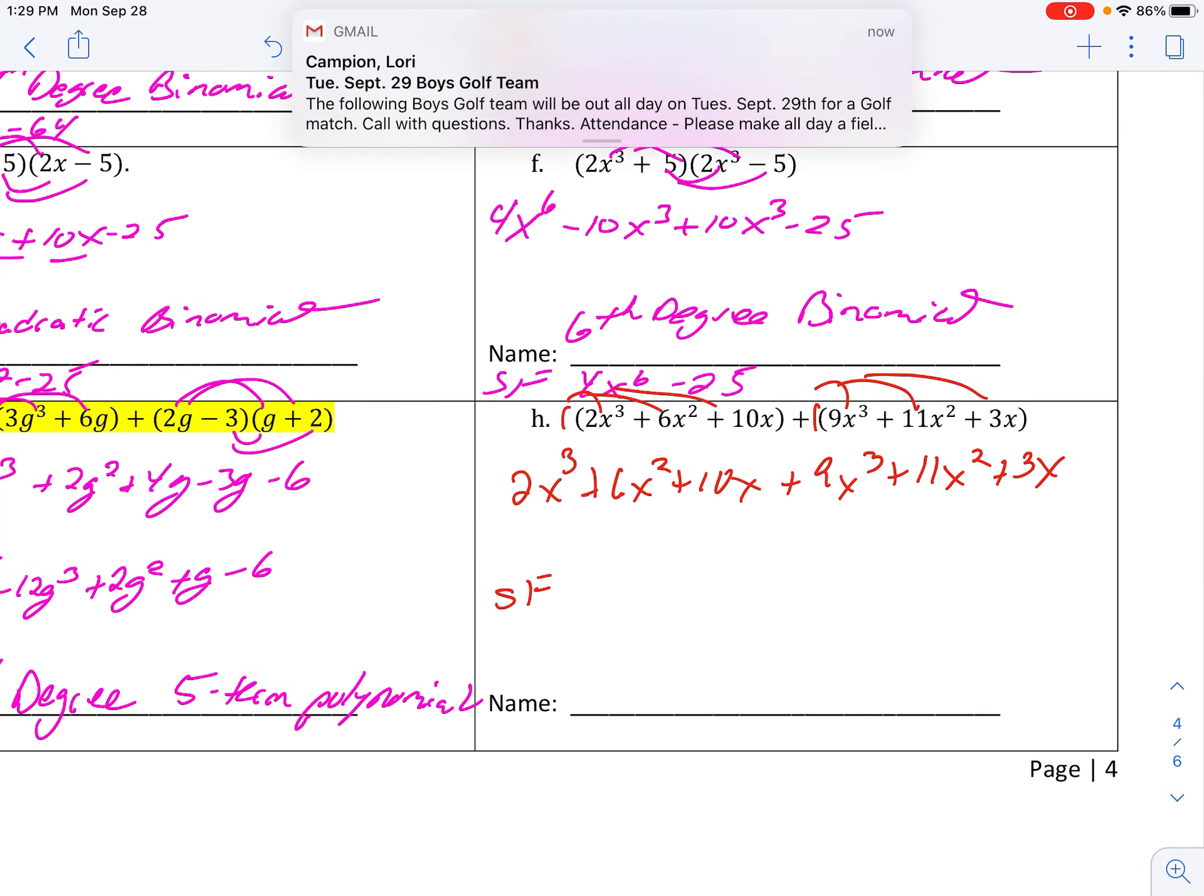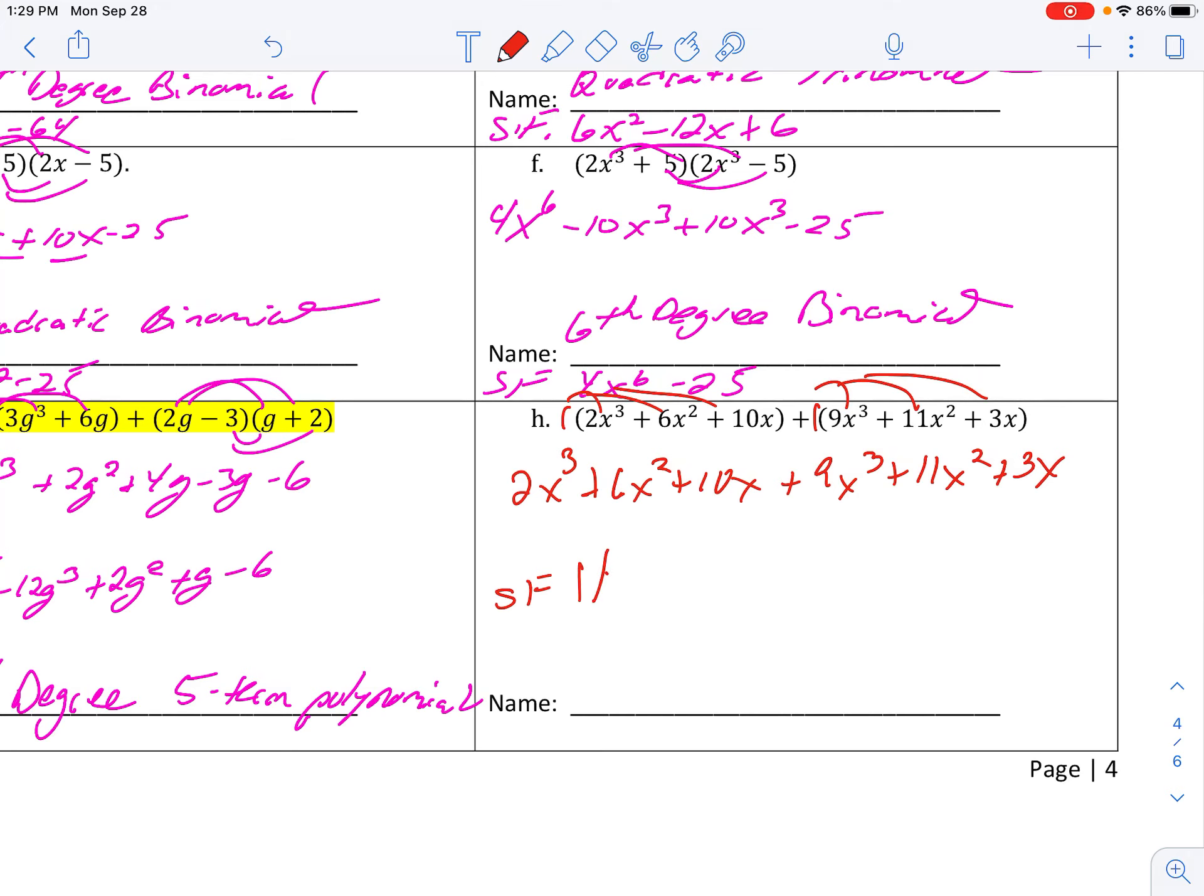All right. Standard form. 2 and 9 leads it off. So those are x cubes. So it looks like I get, what? 11 x cubed. 17 x squared. And 13 x. This is a cubic trinomial.